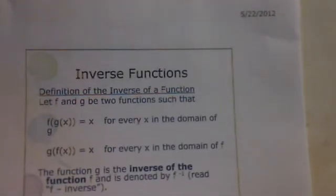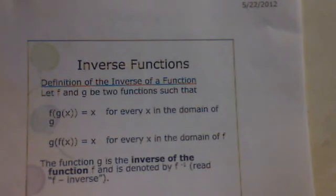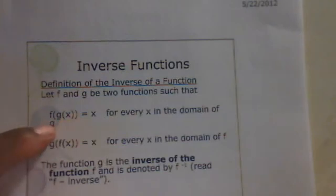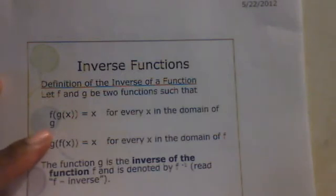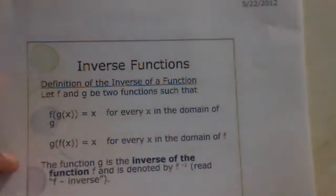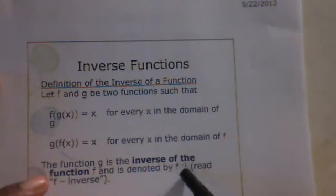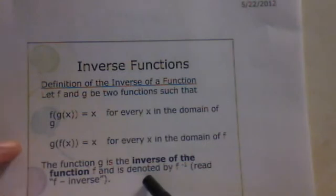Let's look at what an inverse function is. We're going to let two functions f and g be such that the composition f of g of x is equal to x for every x in the domain of g, and g of f of x is equal to x for every x in the domain of f. The function g is considered to be the inverse of f, denoted by f with a negative one exponent — we read that as f inverse, not f to the negative one.